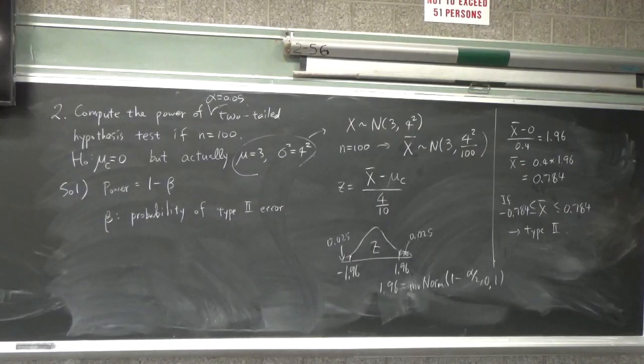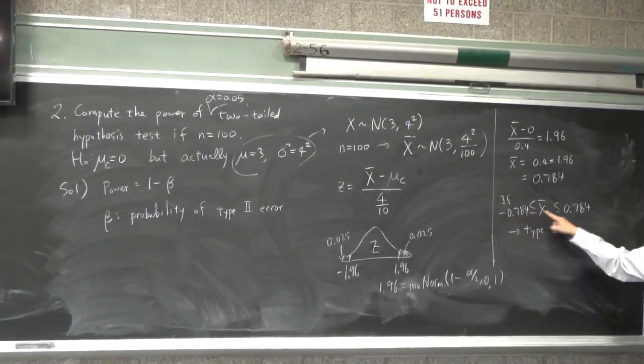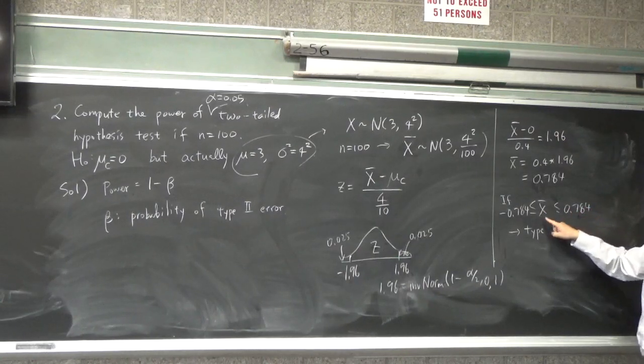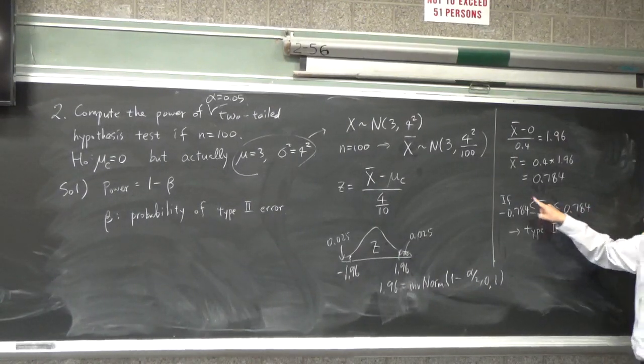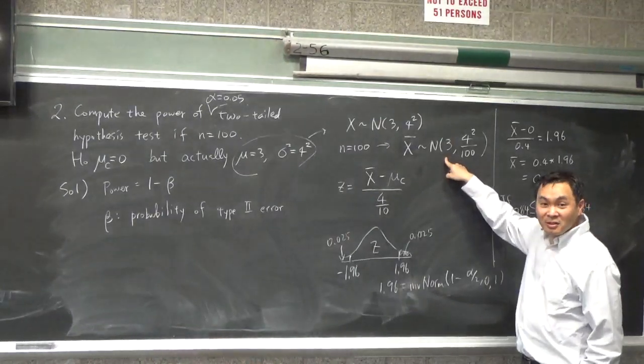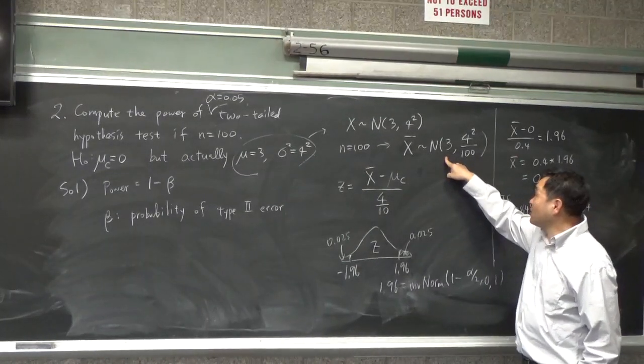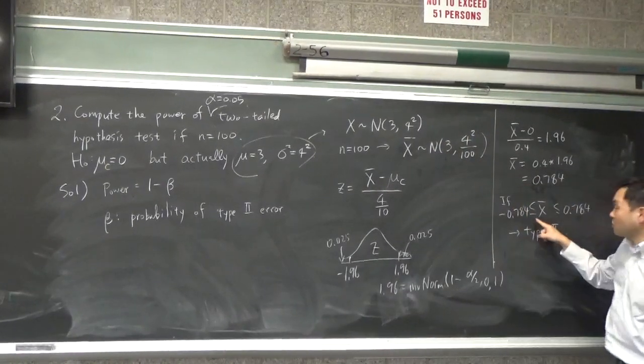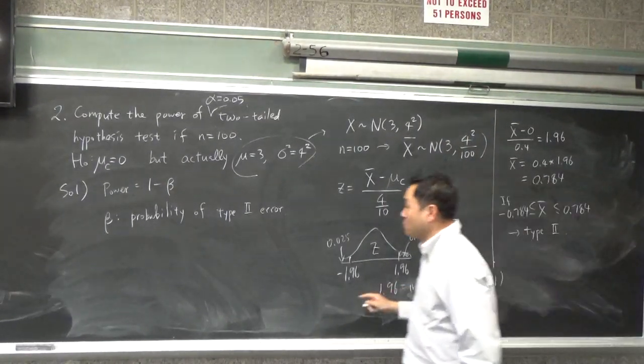All right, so now we want to know what's the probability that this can happen. But that means we have to go back and look at this one. And see, since x bar follows this normal distribution, we have to calculate the probability of this happen.